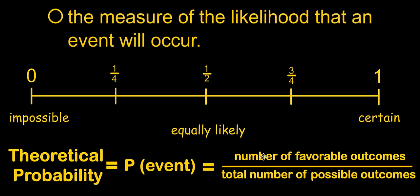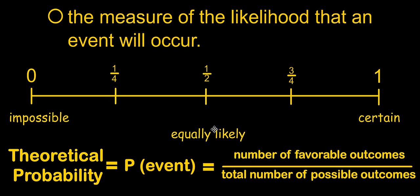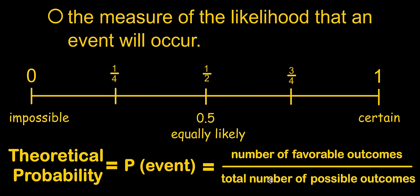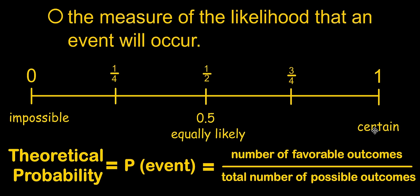Now, anytime that the number of favorable outcomes is half of the number of total outcomes, then we say that this is an equally likely opportunity for that outcome to occur. The decimal equivalent is 0.5. And anytime the number of favorable outcomes is actually equal to the total number of possible outcomes, we consider this to be a certainty. That means that it is certain the event will occur.